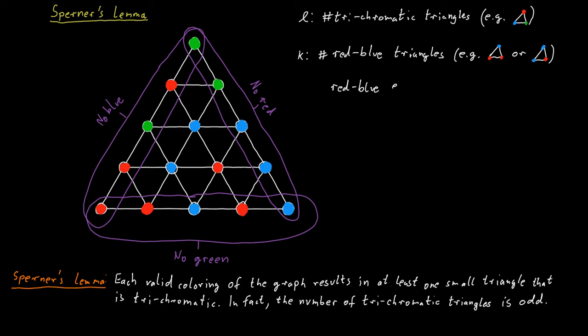Some of these edges lie on an outside face of the large triangle. And other red-blue edges lie inside the large triangle. But note that the red-blue edges that lie on an outside face of the large triangle must lie on the bottom of the large triangle.